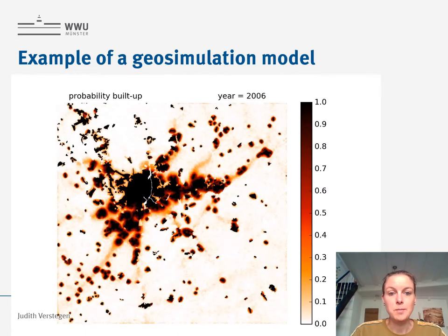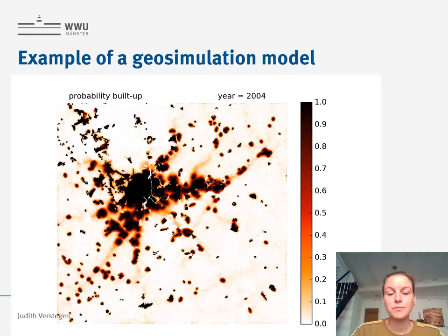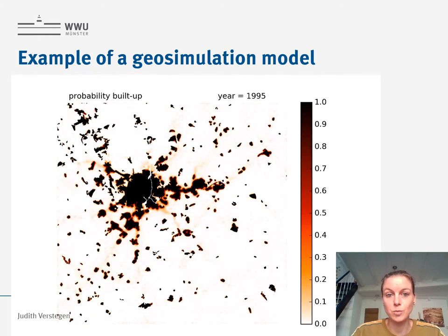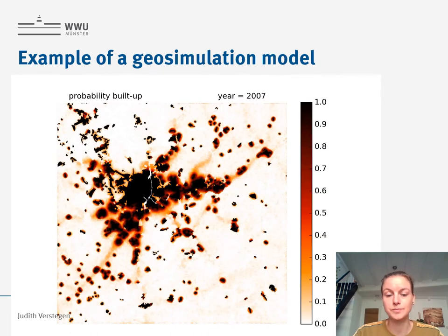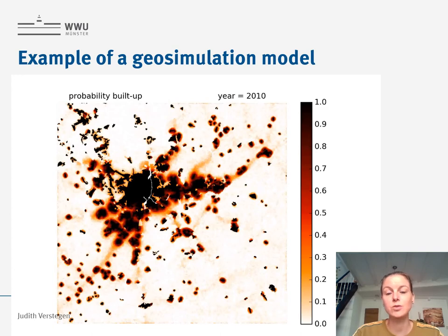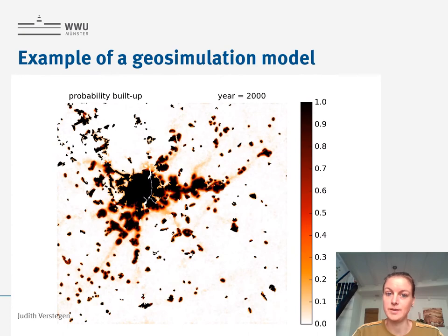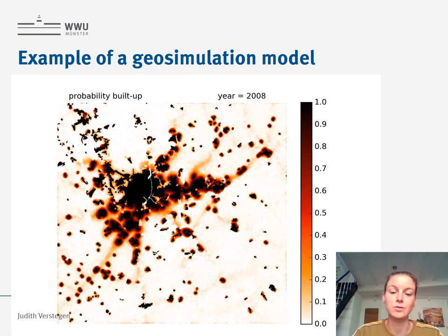You see here in black the urban area and in white the non-urban area. In between you see red colors, which indicate that there is a certain probability that the location changes from non-urban to urban. The fact that it's a probability also implies that there is some uncertainty. That is very often the case when we do geosimulation modeling.